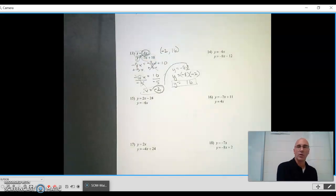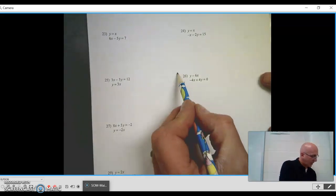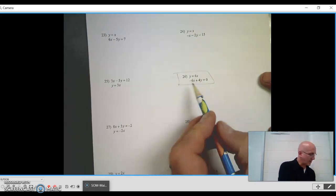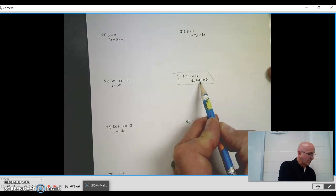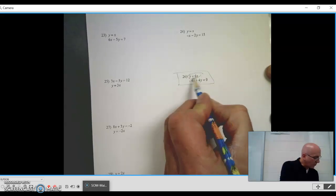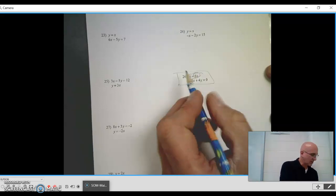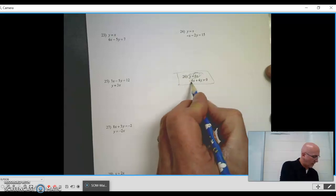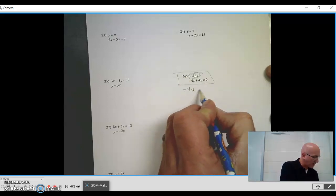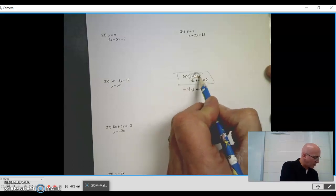Now what happens if one or both of the equations isn't put into a nice form like this? Let's look at an example of that. Let's look at number 26 here. We have y equals 6x and then negative 4x plus 4y equals 0. One of them is already solved for one of the variables, so that means wherever y appears in the next one, I can put in this 6x. I'm taking the second equation: negative 4x plus 4 times whatever this is. I'm just substituting this in for the y.